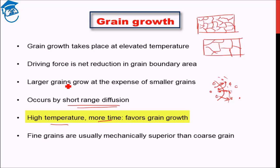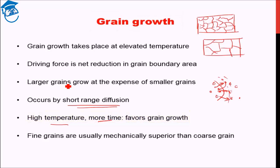In summary, today we began with the strengthening mechanism known as strain hardening, which leads to increased dislocation density and thereby increased strength, but with a compromise of decreased ductility. To restore ductility, we saw recovery, recrystallization, and grain growth. In recovery there is a reduction in strain; in recrystallization new grains nucleate and take over the old stressed grains; and in grain growth, smaller grains are consumed by larger grains. The next class will discuss a couple of other mechanisms used for strengthening. Have a great day, goodbye.